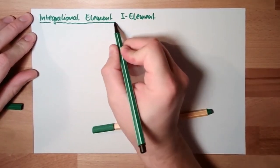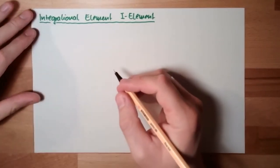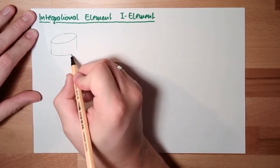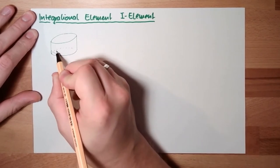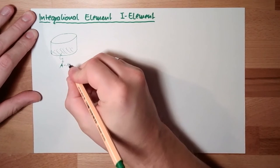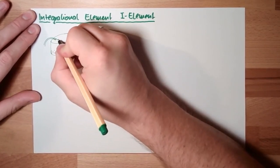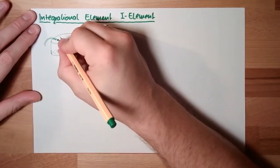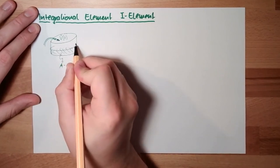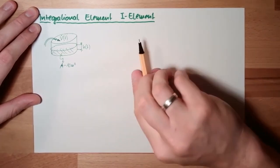First, I will give a short example of what an integrating element is. Imagine we have a pool — a big pocket pool. The pool has a certain area; let's say 10 square meters. I have a hose and I'm filling this pool with a certain flow. The pool starts to fill and the level will go up, and I want to know how much level I will have at a certain time.